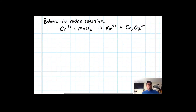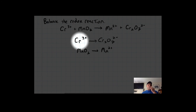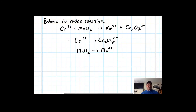Let's look at another problem. We have Cr³⁺ reacting with MnO₂. Split into two half reactions: Cr³⁺ is going to become the Cr₂O₇²⁻ dichromate ion — make sure you track your charges. The other half-reaction is MnO₂ forming Mn²⁺. Attacking the top reaction first: balance chromium — one chromium on the left, two on the right, so put a coefficient of two in front of Cr³⁺. Now we have two chromiums on each side.